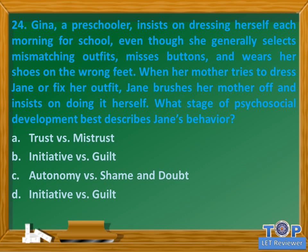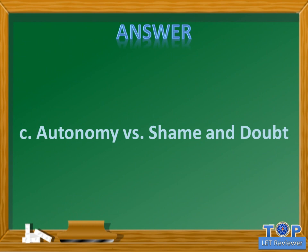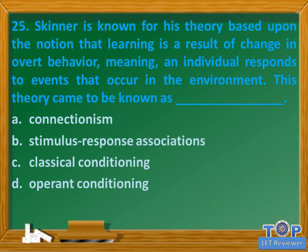Question number twenty-four: Gina, a preschooler, insists on dressing herself each morning for school even though she generally selects mismatching outfits, misses buttons, and wears her shoes on the wrong feet. When her mother tries to dress or fix her outfit, Gina brushes her mother off and insists on doing it herself. What stage of psychosocial development best describes Gina's behavior? A) trust versus mistrust, B) initiative versus guilt, C) autonomy versus shame and doubt, D) initiative versus guilt. Answer: C) autonomy versus shame and doubt.